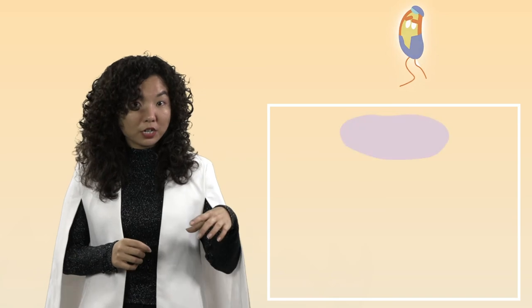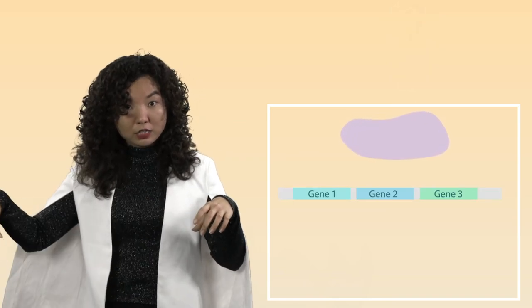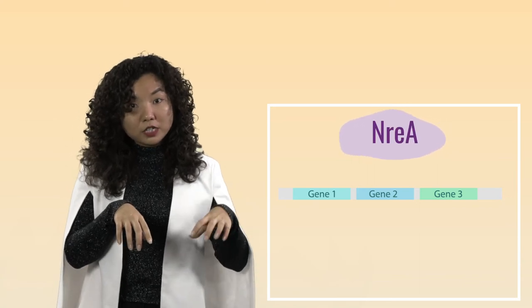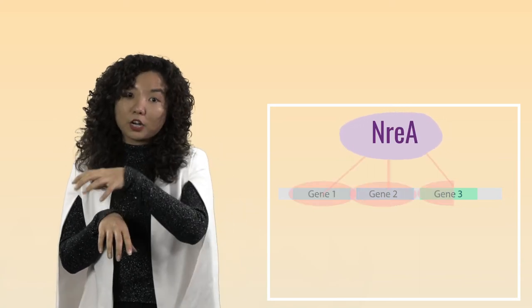In one group of enhanced nickel tolerance bacteria, I have found mutations in a repressor gene near a unit of genes. This candidate repressor gene is called NREA, which under normal condition represses its nearby target genes.